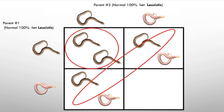So if you ever see an animal advertised as 66% het, that tells you it came from a het-to-het breeding. When you remove the visual recessives, what you're left with are normal-looking animals that are 66% het — or carriers — of that gene.